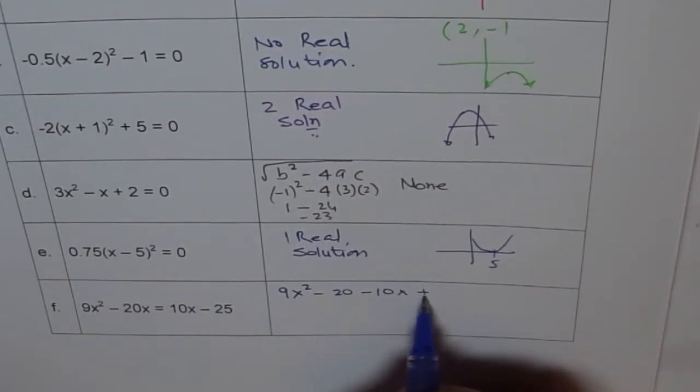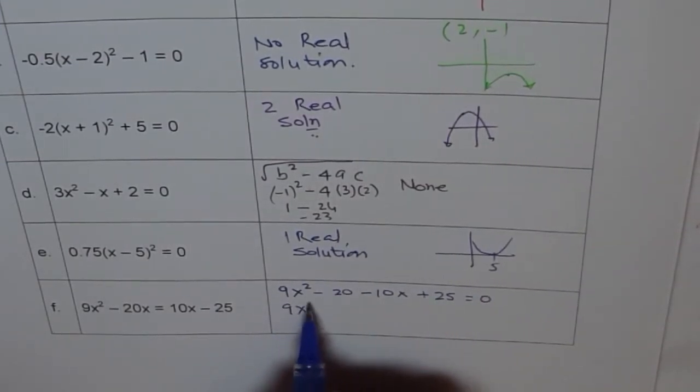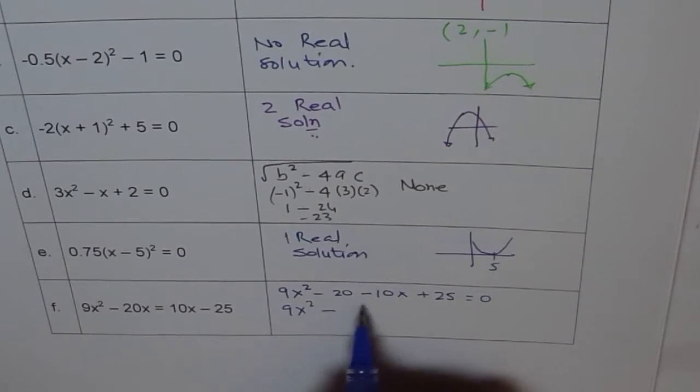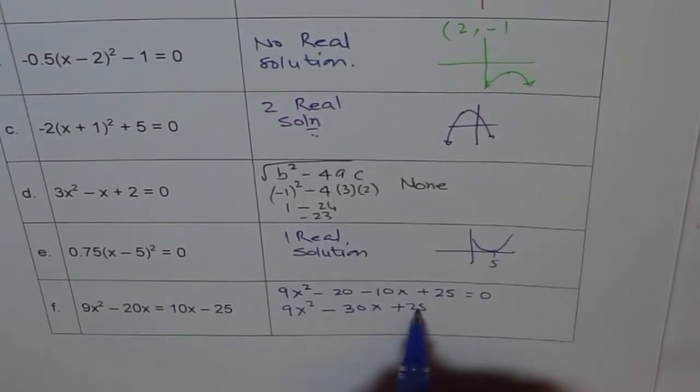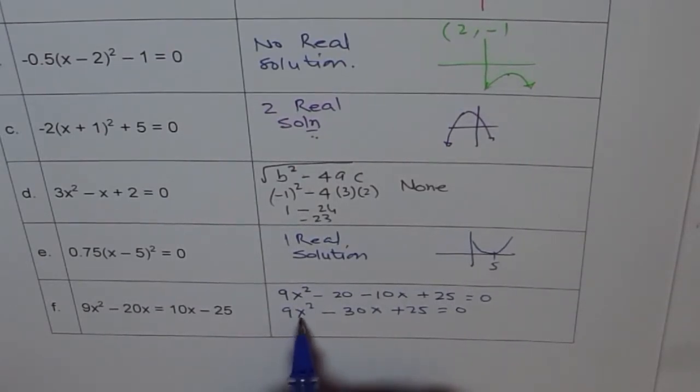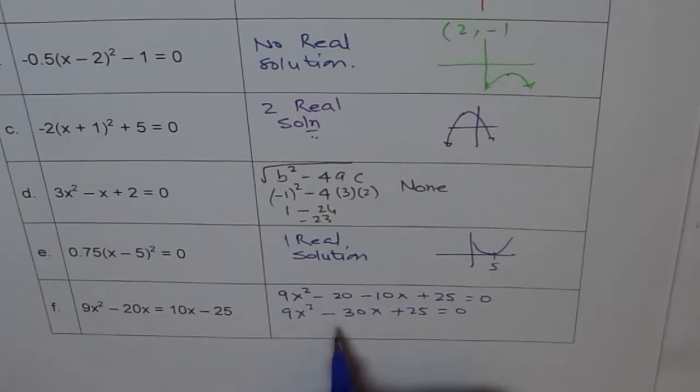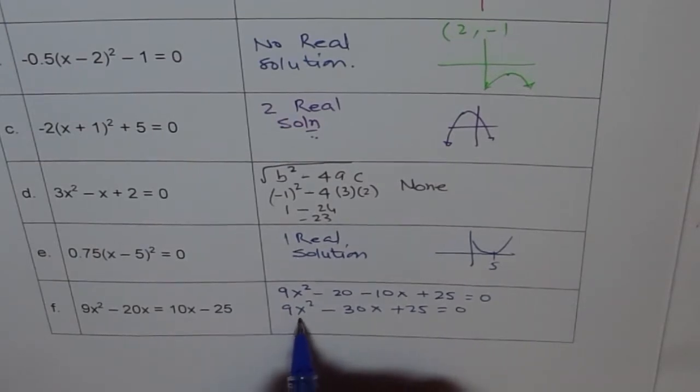And this seems to be a perfect square. This is (3x)², this is 5², and 2 times 3 times 5 is 30, so it makes sense, right? So I can write this as (3x - 5)² = 0.